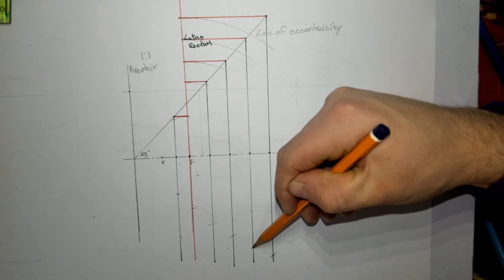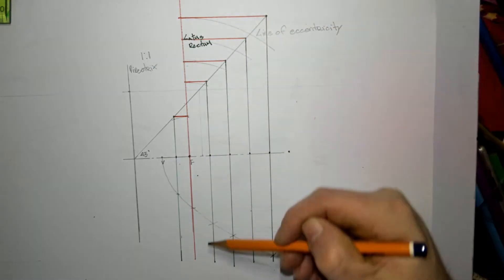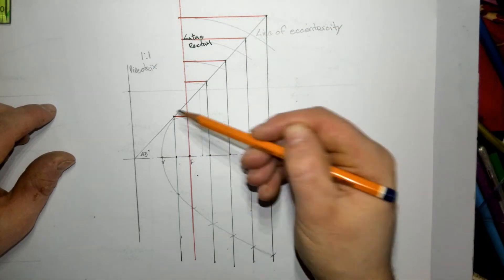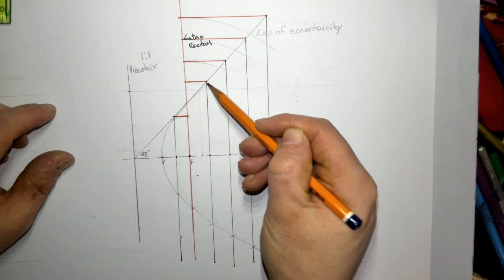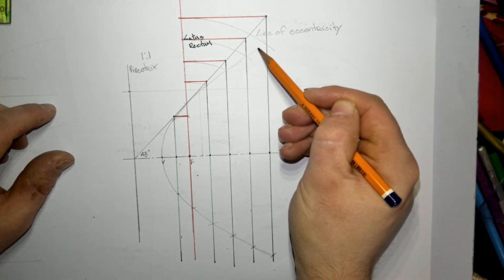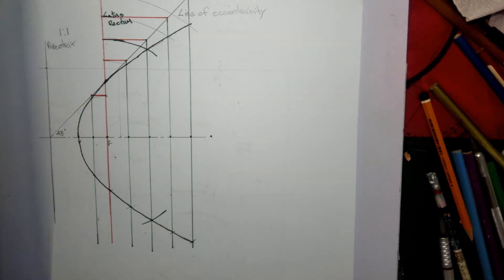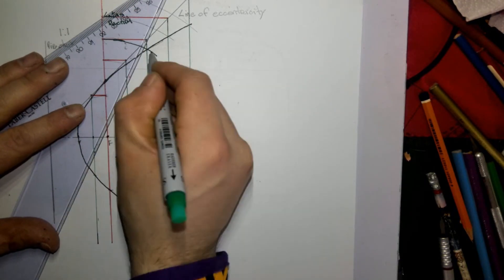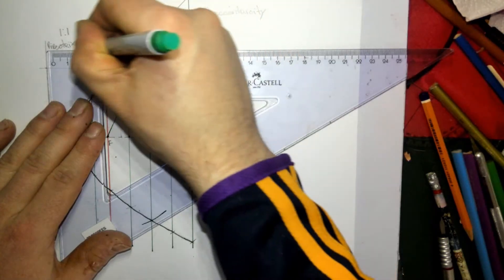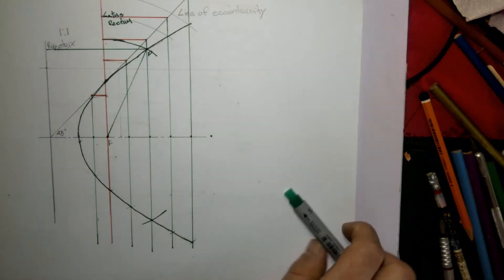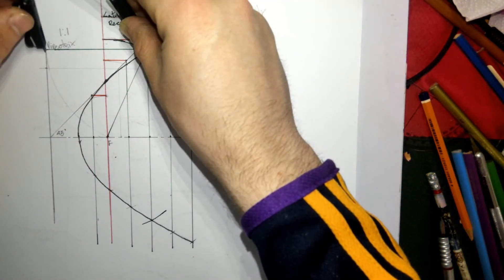That's what it looks like after it's done. And PF is equal to PD. So F to any point on the curve, so P there, equals P to D. How you would prove that is putting your compass on P, bringing the nib to F, and swing it up there—they're equal.